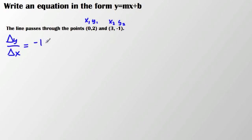So I have negative 1 minus 2 over 3 minus 0. So in this case, I have negative 1 minus 2 is negative 3 over 3. So I can simplify that to negative 1. So my slope is negative 1. So y equals negative 1x plus b.